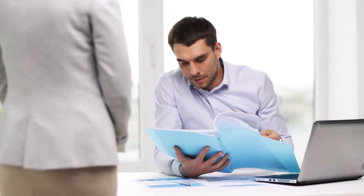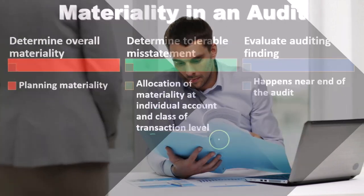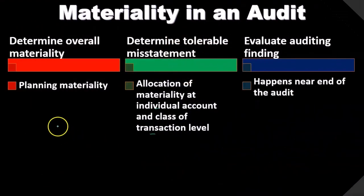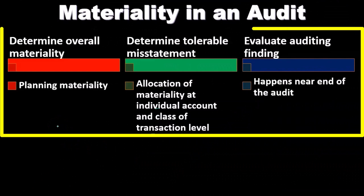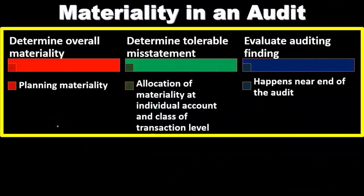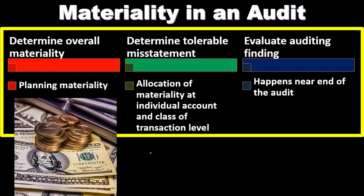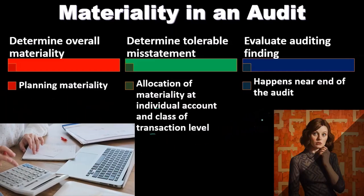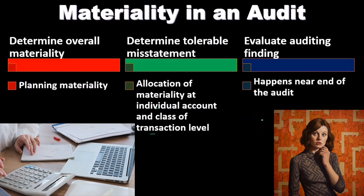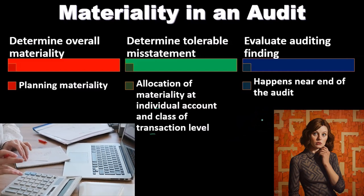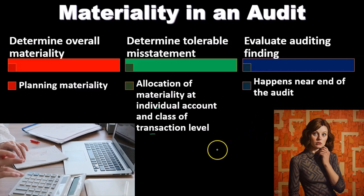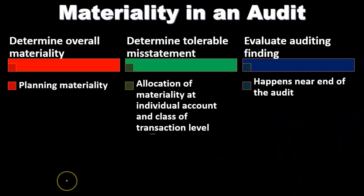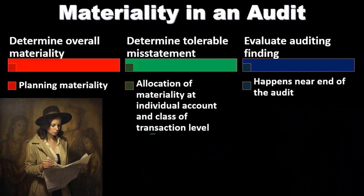Then we can evaluate the audit findings, which happens near the end of the audit process. We determine the overall materiality level, determine the tolerable misstatements at the individual account levels, go through the audit, and then evaluate — taking the tolerable misstatement levels and the results of our audit to compare findings against the determined overall materiality level.